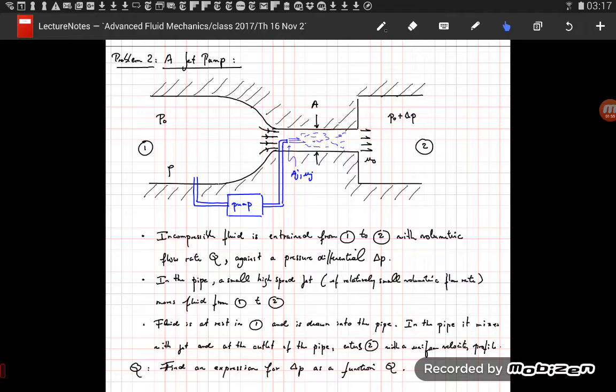And the question is to determine the pump curve, which is essentially the relationship between delta P and Q, where Q is the total volumetric flow rate from compartment 1 to compartment 2.